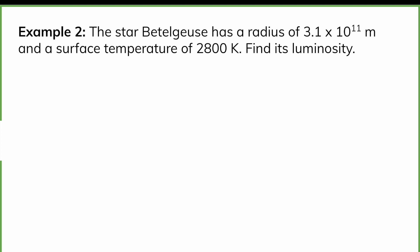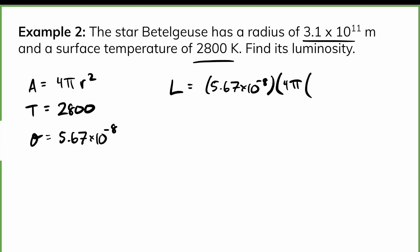Next, we have the star of Betelgeuse with a radius of 3.1 times 10 to the 11 meters and a surface temperature of 2,800 Kelvin, and we need to find the luminosity. So we know that the area is going to be 4 pi R squared, because that's the area of a sphere. And the temperature is 2,800, and we're going to use sigma 5.67 times 10 to the negative 8. So if we plug all these values into the formula, we get 5.67 times 10 to the negative 8 times 4 pi. And we have the radius, which is 3.1 times 10 to the 11 all squared, multiplied by 2,800 to the power of 4. And that gives us a value of 4.2 times 10 to the 30 watts.